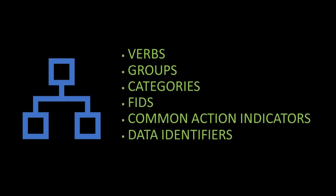We're going to continue on with general information. We're going to talk about verbs, groups, categories, FIDs, common action indicators, and data identifiers. All of this will help you read the MMPA. Eventually we're going to get to the reading portion, and these six things are going to help you read the MMPA proficiently.